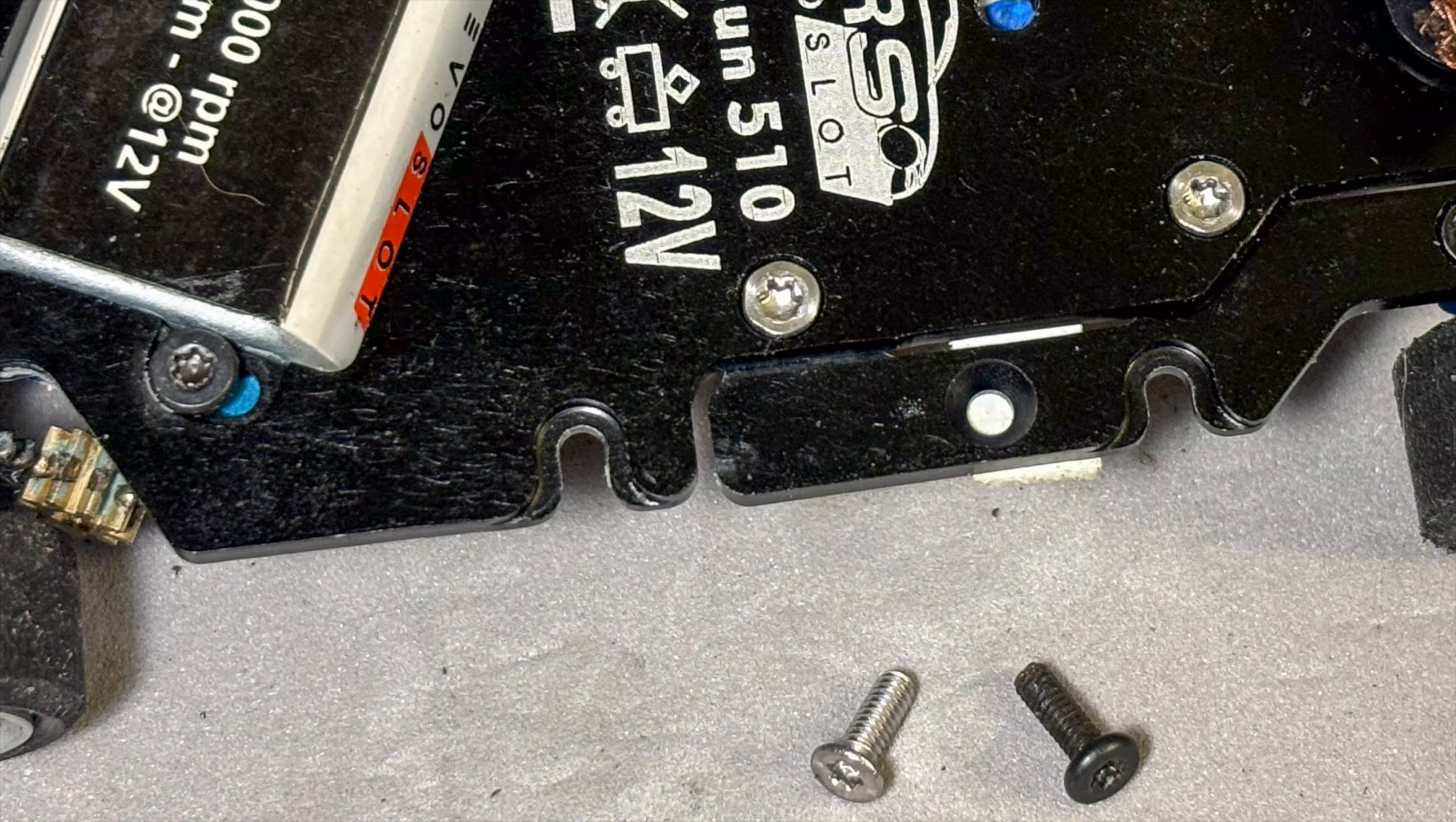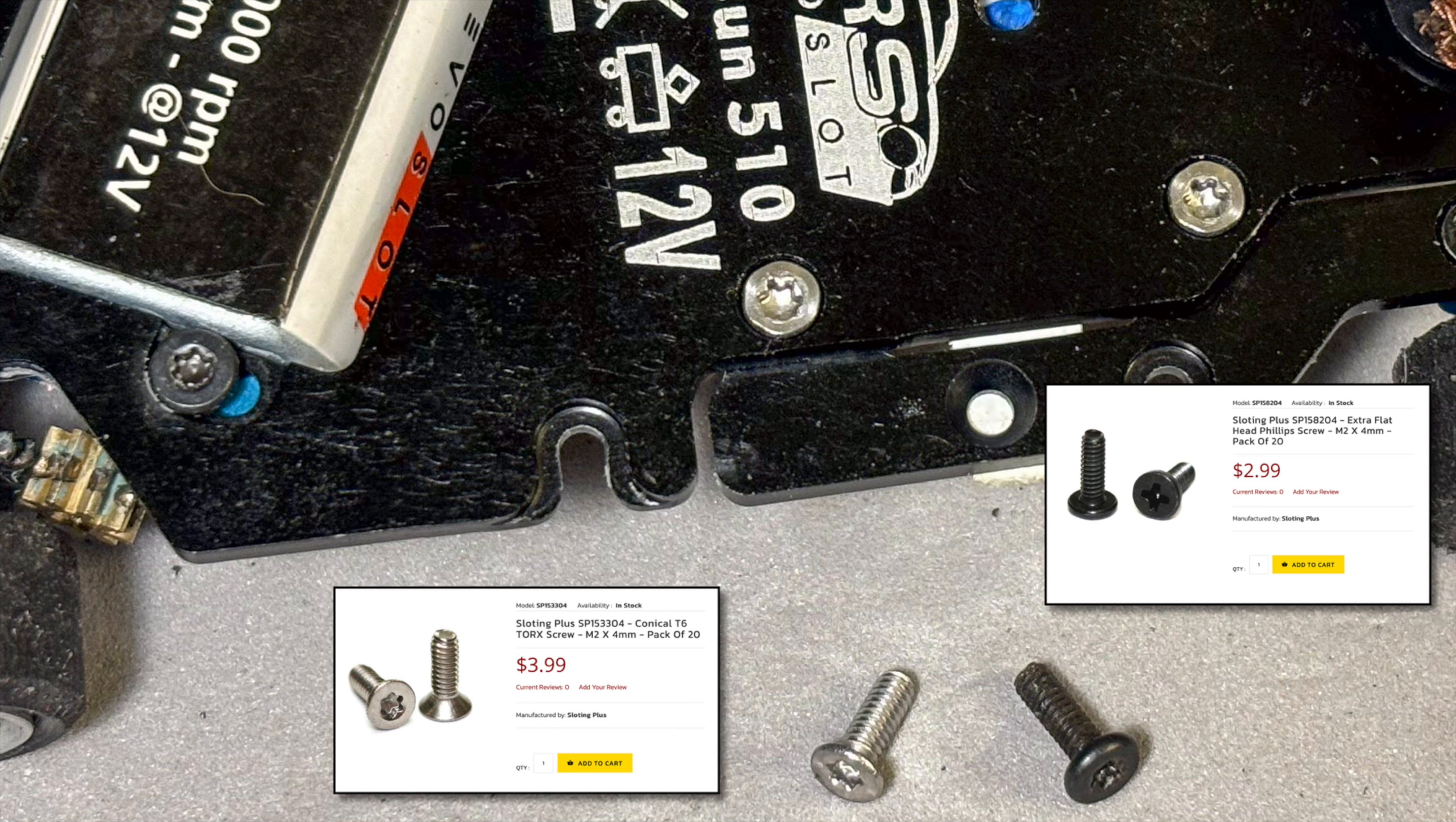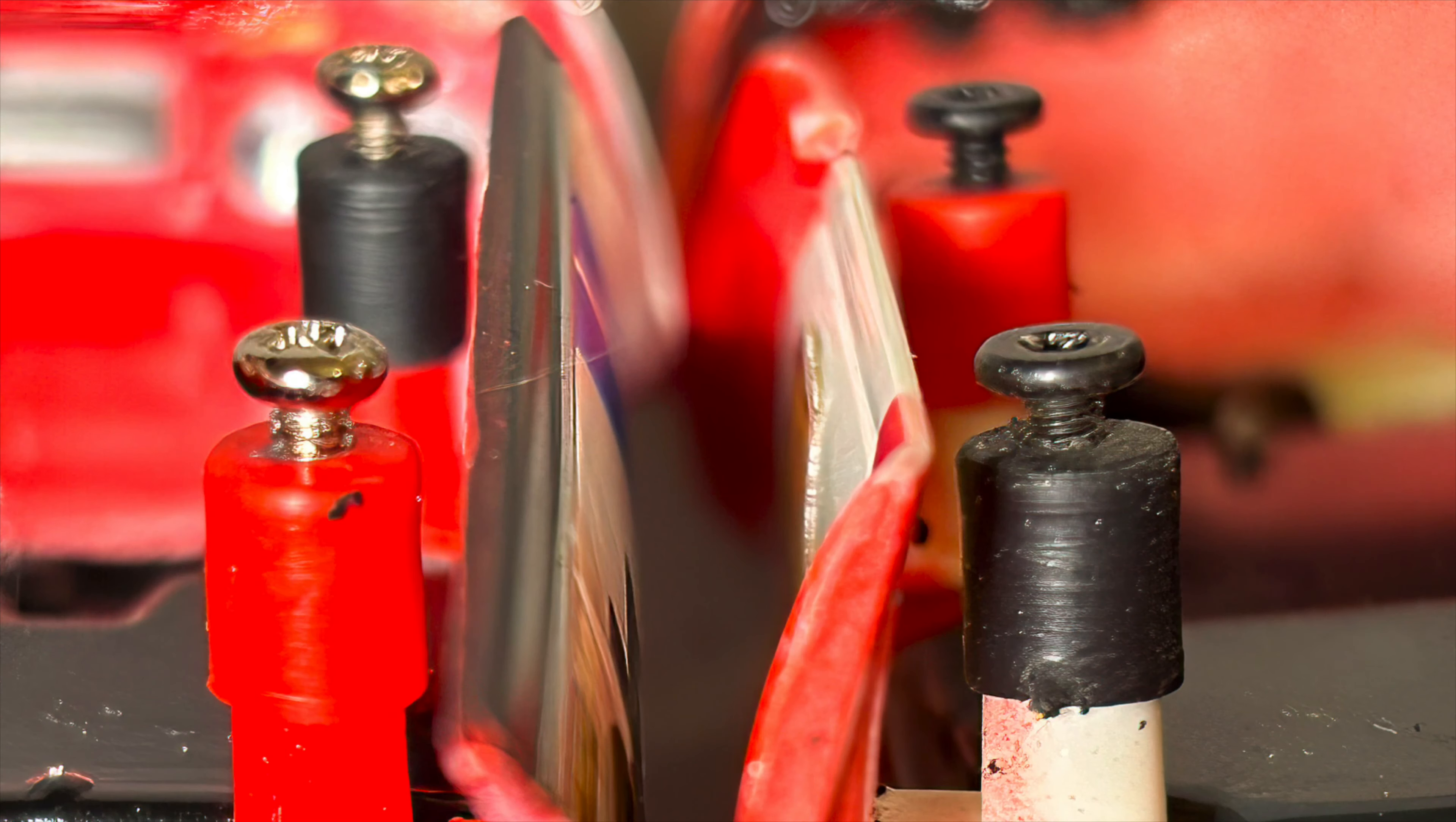I replace all the chassis screws with Torx T6 screws from Slotting Plus. I use Torx T6 screws in all my cars, so the Revo Slot Datsun is no exception. Here's the part number from Slotting Plus for the screws that I use. I also replace the motor mounting screws as well as the body mounting screws. You can see here the super flathead screw gives you more clearance, which allows me to run the body a little looser and not worry about the screws dragging on the track.